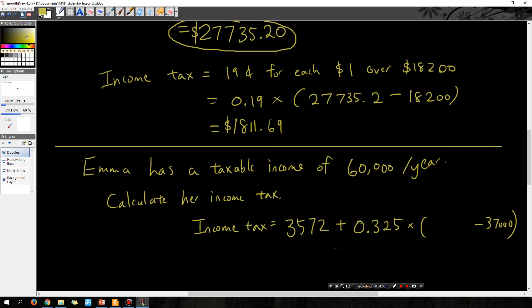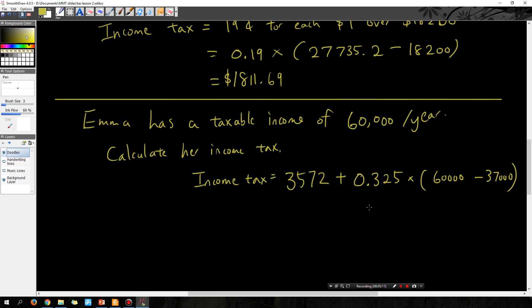So basically this is the formula. We're going to put in the amount of taxable income Emma earns: $3,572 plus 32.5 cents. Find out how much it is over $37,000, and then 32.5 cents for each dollar over $37,000, plus $3,572. Put all that into the calculator.